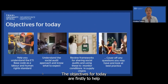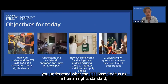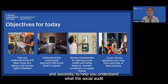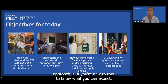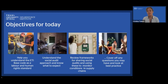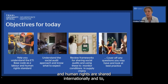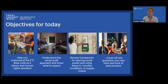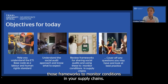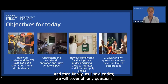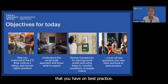The objectives for today are: firstly, to help you understand what the ETI base code is as a human rights standard; secondly, to help you understand what the social audit approach is if you're new to this and know what you can expect; thirdly, to review some frameworks for how information on labour and human rights is shared internationally and how you can use those frameworks to monitor conditions in your supply chains; and finally, to cover off any questions you have on best practice.